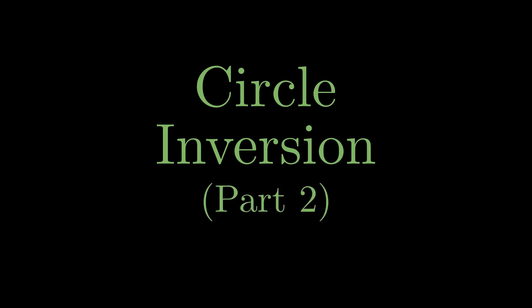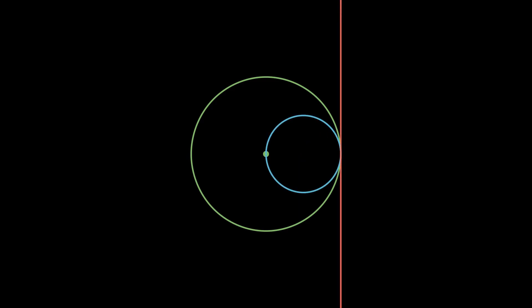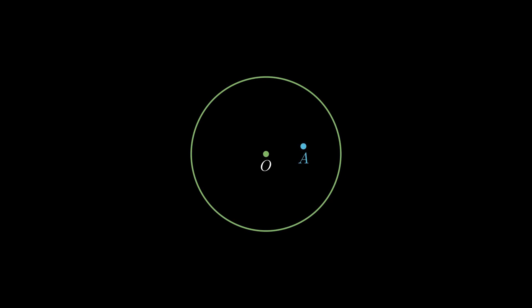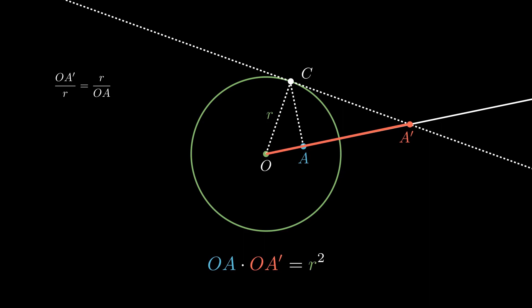Circle inversion is a transformation that takes circles to other circles, unless the circle goes through the origin of the inversion circle, in which case it becomes a line. There's one more thing you need to know, which is the formula for how to invert a point. We went over this in the first video and it does involve some trigonometry. However, we're left with quite a simple formula: the distances of the two points from the origin, when multiplied together, give the radius of the circle squared.